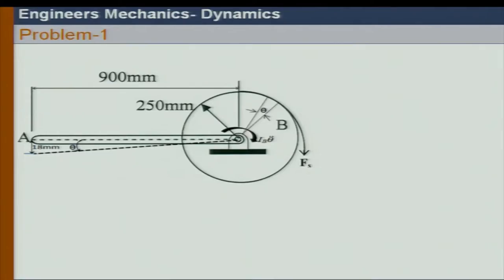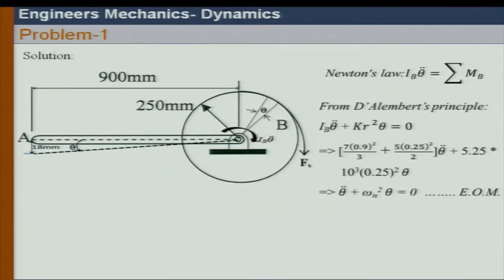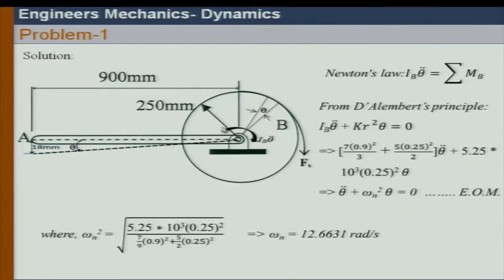So we'll move on to the solution. What we have done is taken I_B directly, so we have two components: one is M L square over 3 coming from the bar — because if I look at the rotational inertia force about this point, we get M L square over 3 — and from the disc itself we have M R square over 2. From the spring we have K R square. This is the equation of motion we get, and omega N follows from this.